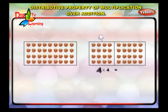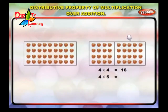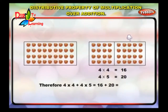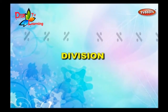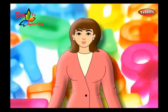4 into 4 is equal to 16. In the second section there are 4 rows of 5 apples. 4 into 5 is equal to 20. Therefore, 4 into 4 plus 4 into 5 is equal to 16 plus 20, which is equal to 36.